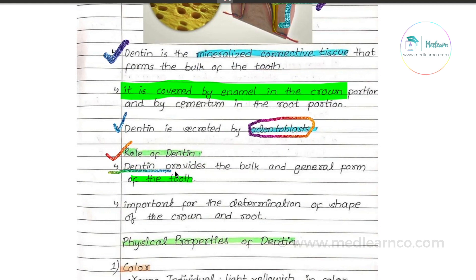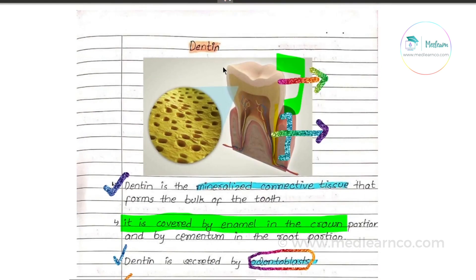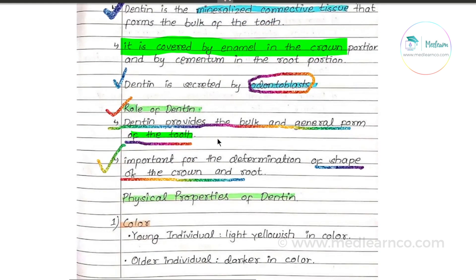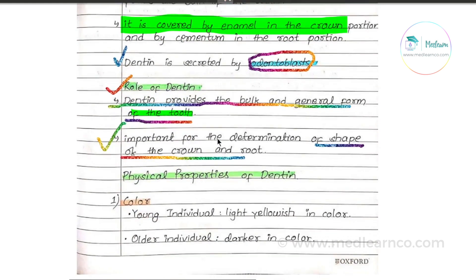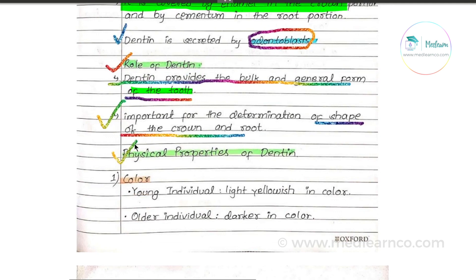The dentin provides bulk and general form of the tooth, and it is important for the determination of the shape of the crown and root. Now we have to look at the physical properties of dentin.